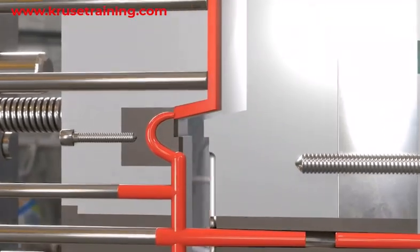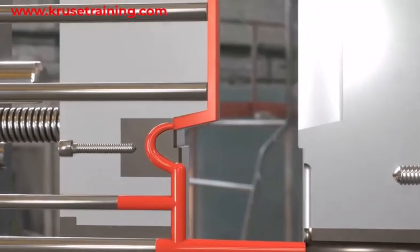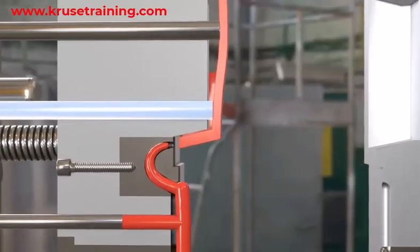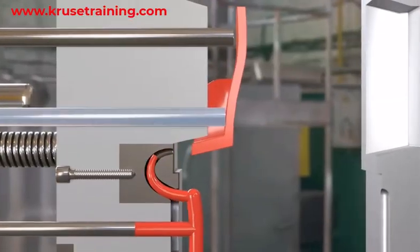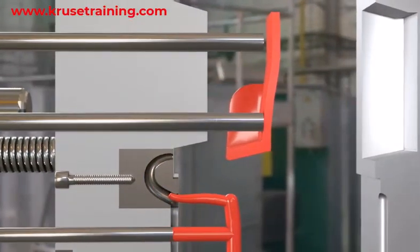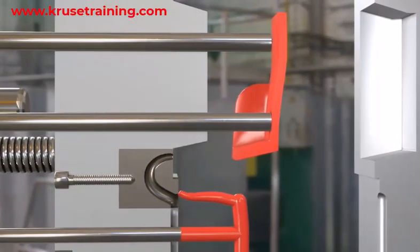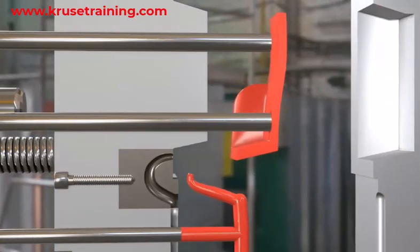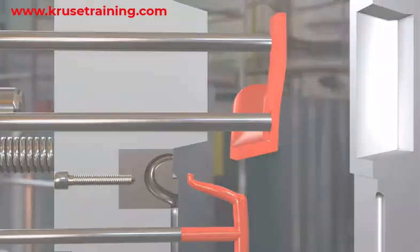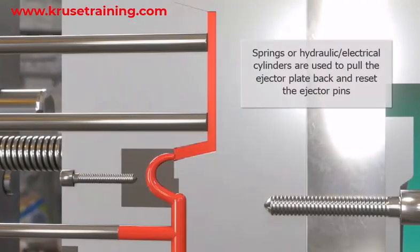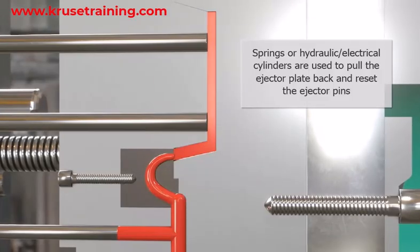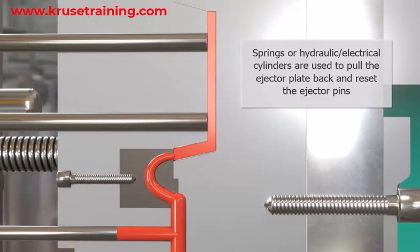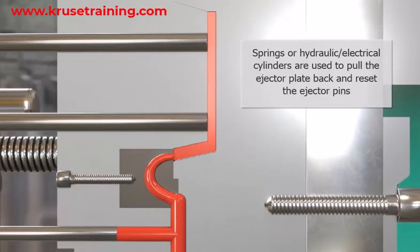Once the molded part has been ejected, the ejector pins need to be retracted to their original position for the next molding cycle. A return mechanism, such as springs or hydraulic or electrical cylinders, is used to pull the ejector plate back and reset the ejector pins.